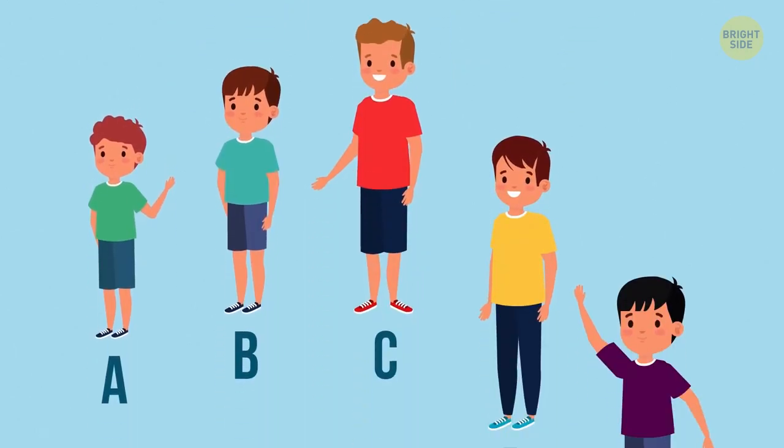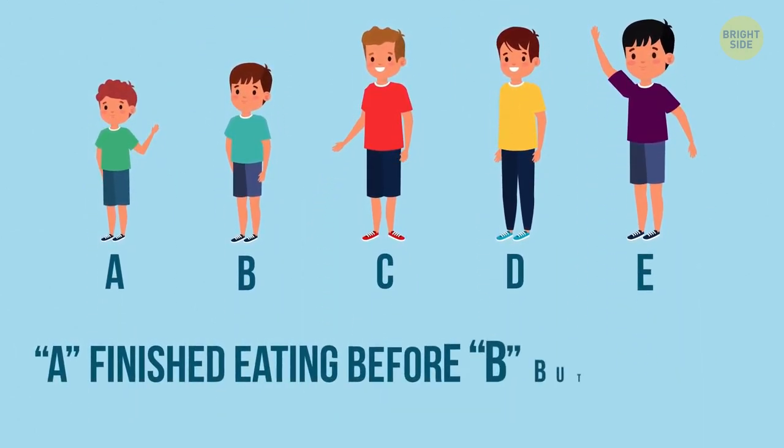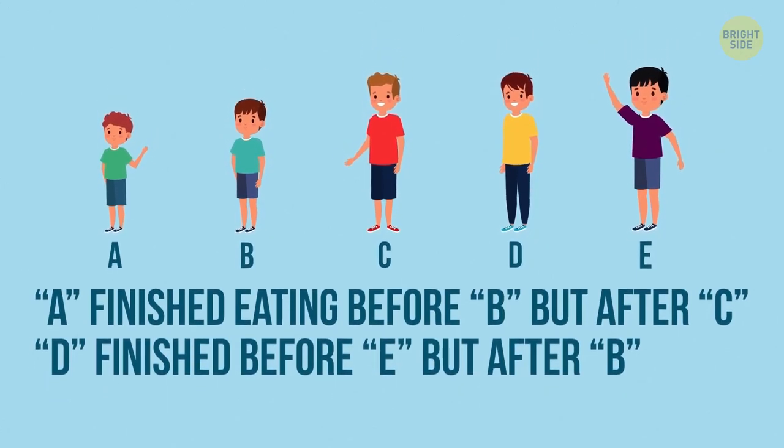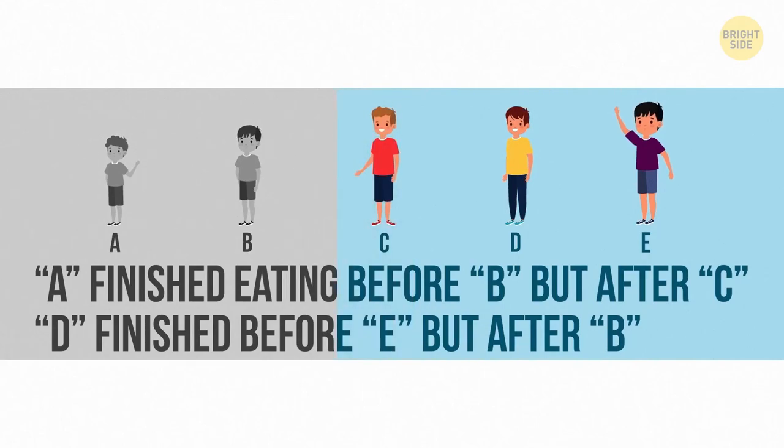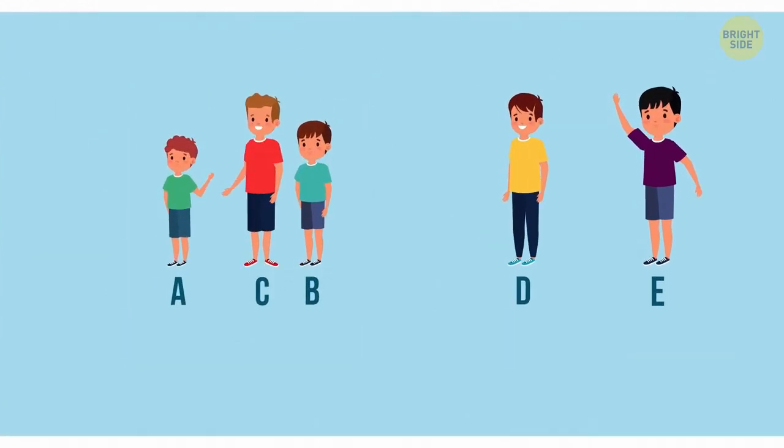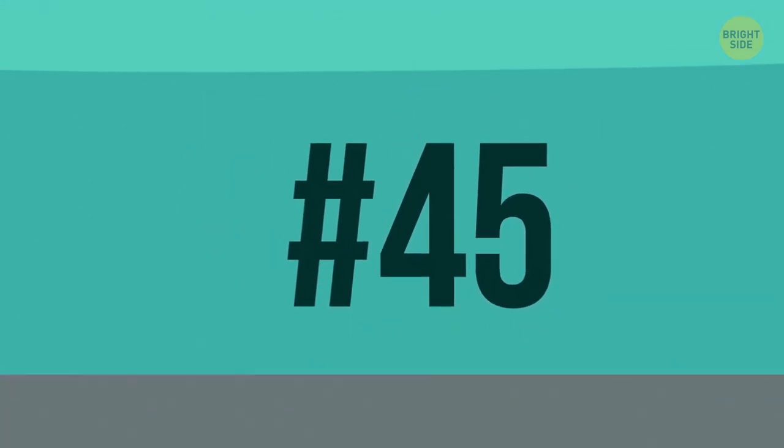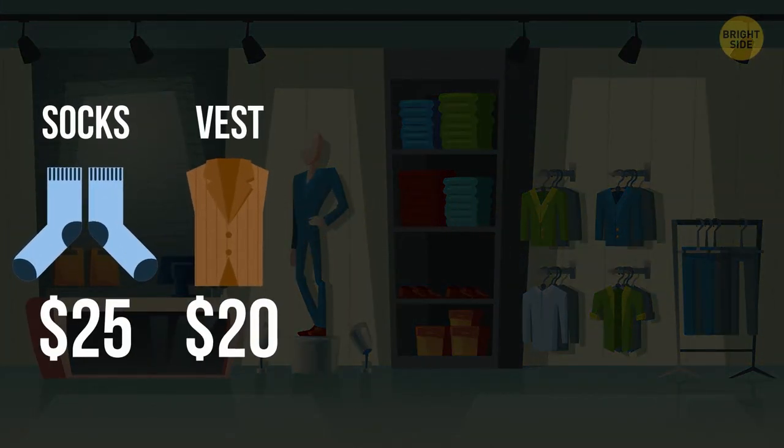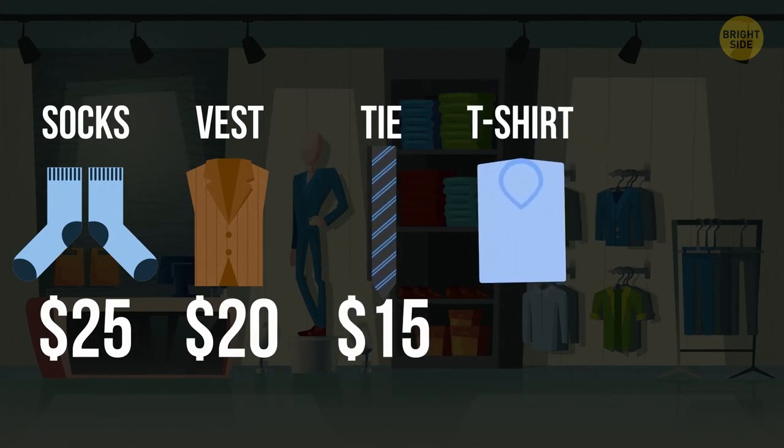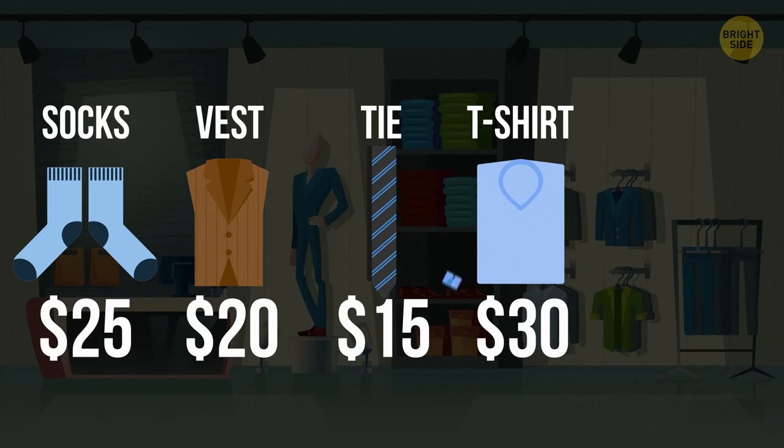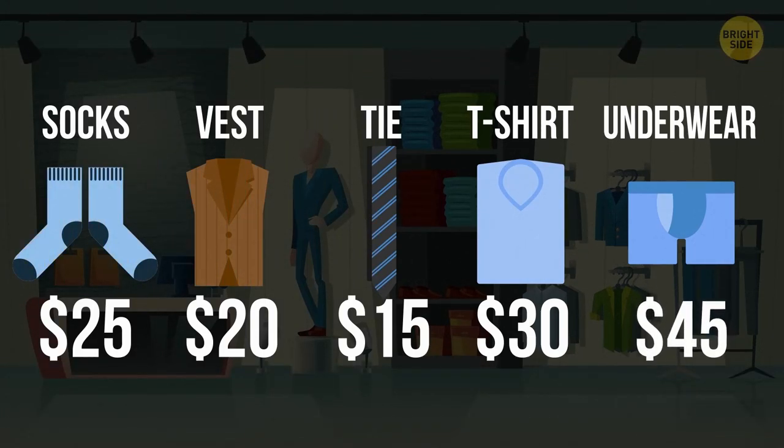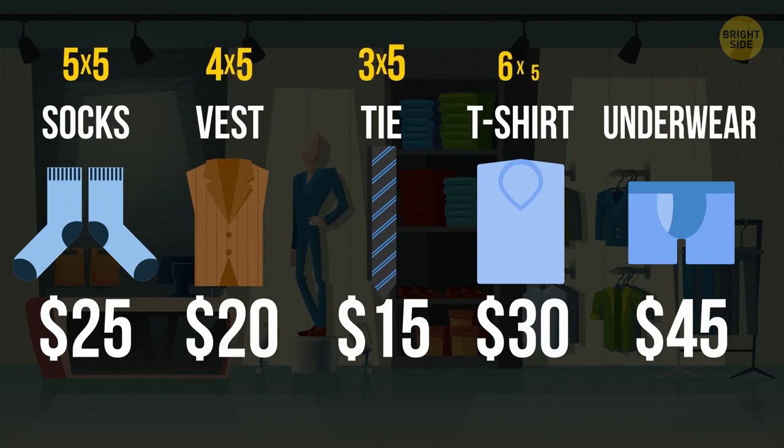44. Five boys were eating oranges. A finished eating before B, but after C. D finished before E, but after B. What's the order the boys finished eating the apples? C, A, B, D, E. 45. One clothing store owner invented a curious method of pricing his goods. Socks cost $25, a vest $20, a tie $15, and a t-shirt had a price of $30. Following this method, how much would a pair of underwear cost? $45. The shop owner charged $5 for each letter of the item's name.